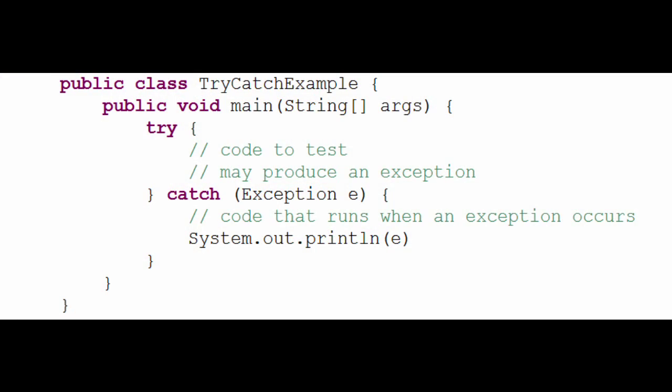If an exception occurs, we'll want to catch the exception and keep it in a variable. Lastly, our catch block needs curly braces, and inside those curly braces you can write any code you want to run when an exception is generated. For example, you could write system.out.println e, which would print out the exception for the user so they know something went wrong.